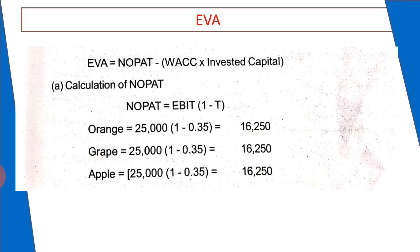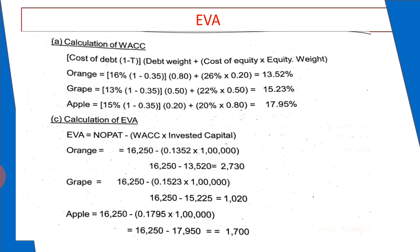For calculating EVA, we use: EVA equals NOPAT minus weighted average cost of capital into invested capital. The investment amount is the same for all companies. In the case of company Orange: EVA = 16,250 minus (0.1352 into 1,00,000) = 16,250 minus 13,520. In the case of company Grape: EVA = 16,250 minus 15,225. In the case of company Apple: EVA = 16,250 minus 17,950.